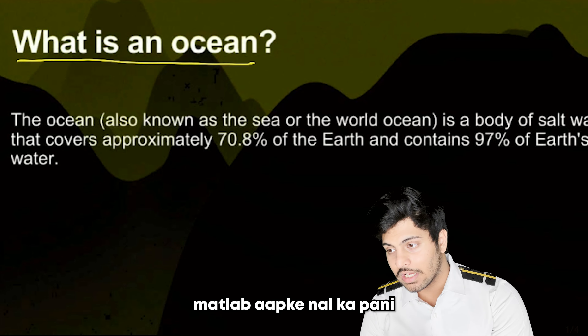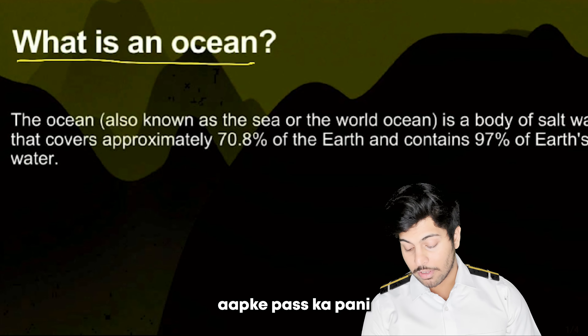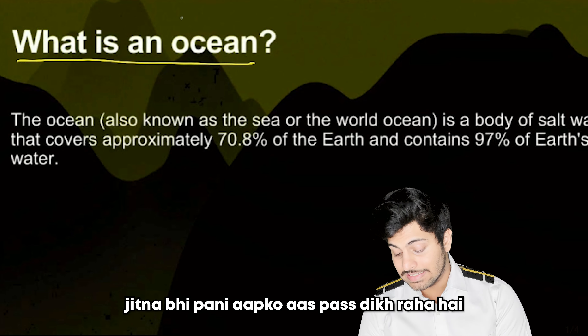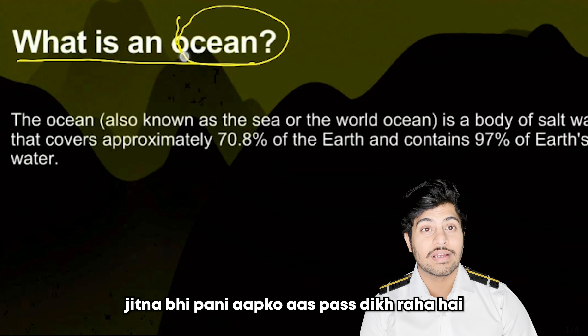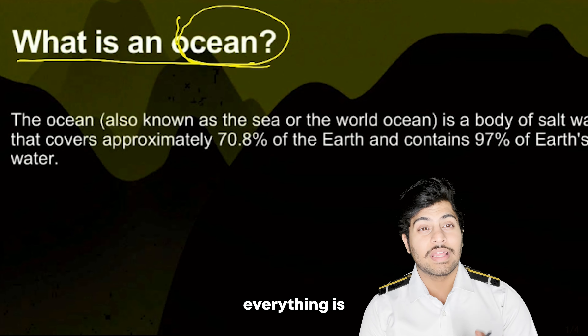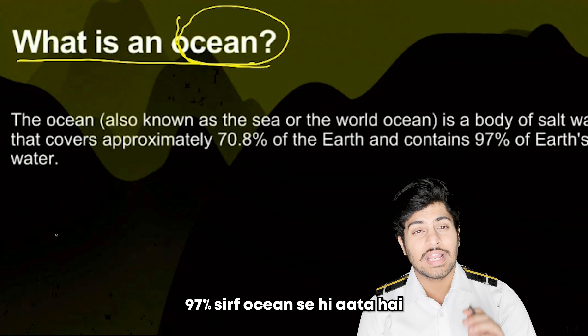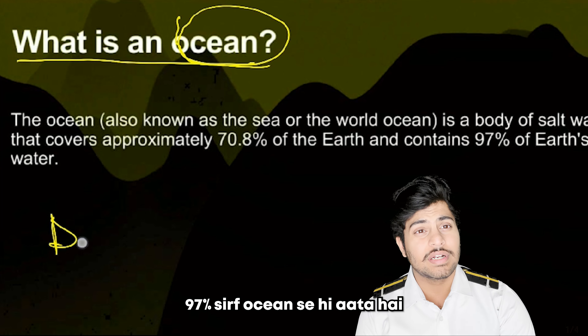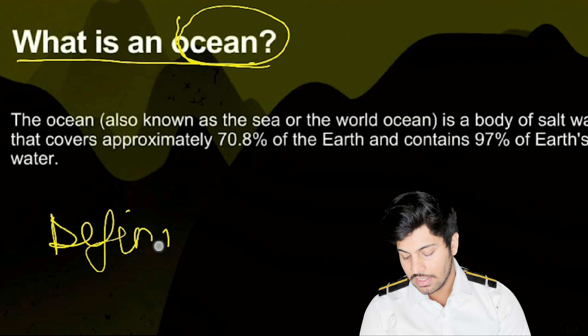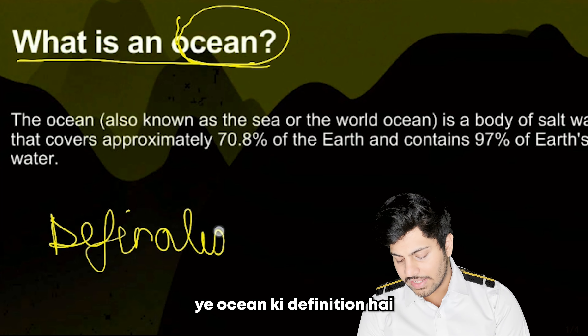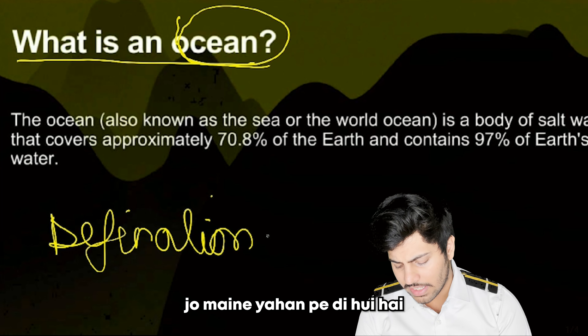And 97% of the Earth's water comes from Oceans. That means whatever water you see, everything — 97% of it is from Oceans. This is the definition of Oceans which I have given you.